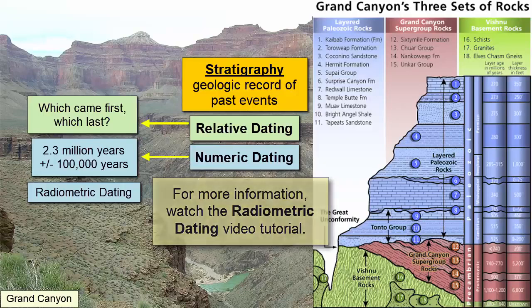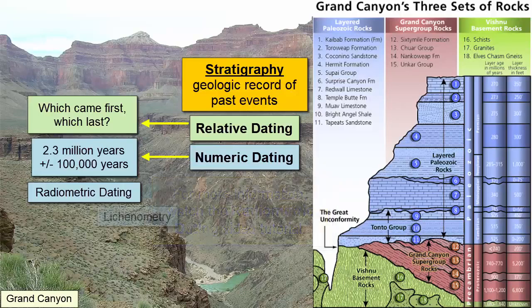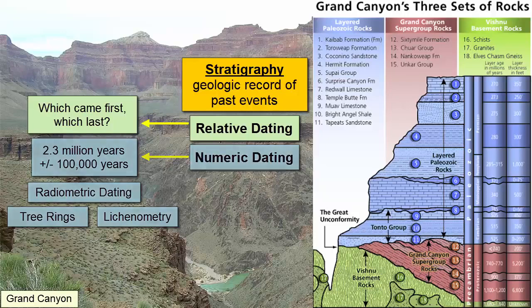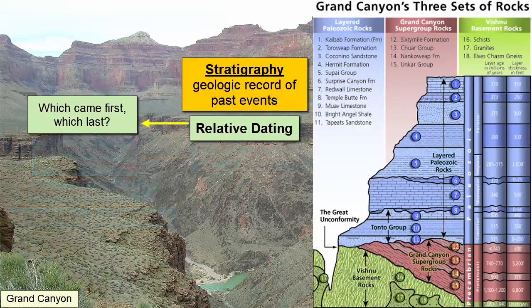Other types of numeric dating processes include lichenometry — studying the time it takes for lichen species to grow on the surface of a rock in a particular area — or counting tree rings. For the rest of this video tutorial, we will focus on relative dating.